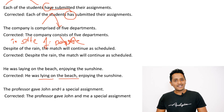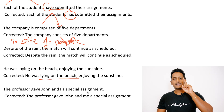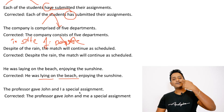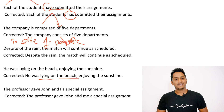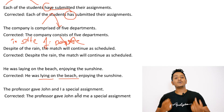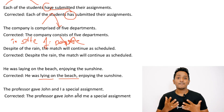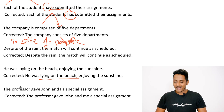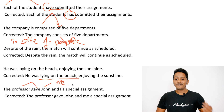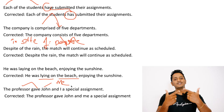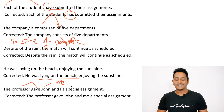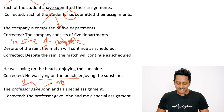'The professor gave John and I a special assignment' — when you are the doer, the actor, you use 'I'. When you are the receiver, you use 'me'. Here the professor is the doer; he gave John and me. If I am the actor, I say 'I gave you'. If someone is giving to me, I say 'give it to me' — me is the receiver. So the professor gave John and me a special assignment.